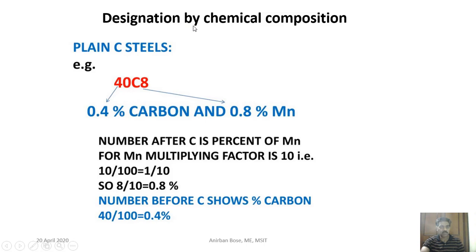Designations are not always specified by mechanical properties; many times they are specified according to chemical composition. For plain carbon steel, consider the example 40C8. The number before 'C' indicates carbon percentage multiplied by 100, so 40 means 0.4% carbon. The number after 'C' indicates manganese percentage multiplied by 10, so 8 means 0.8% manganese.